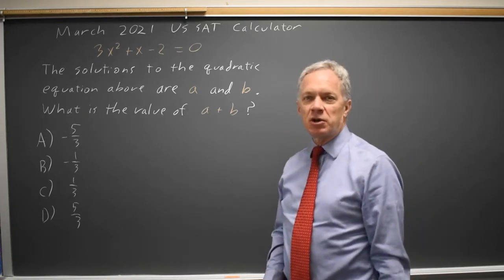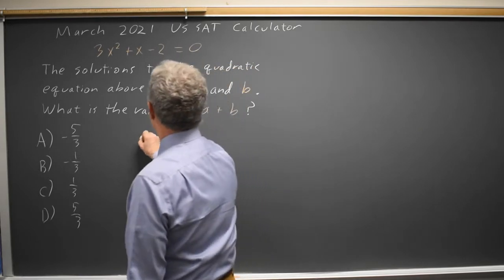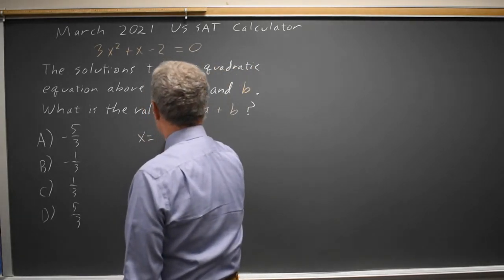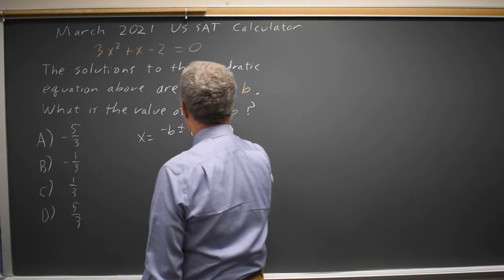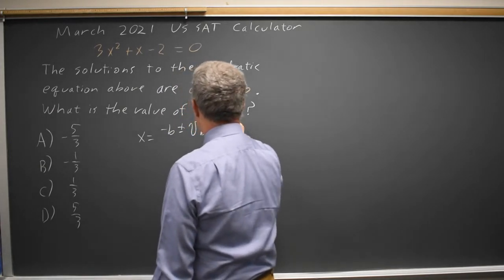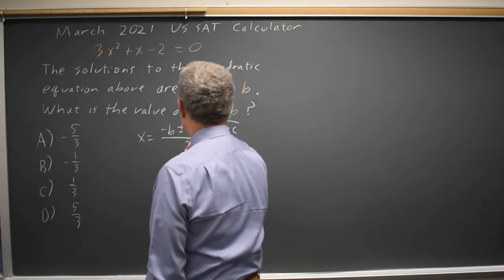One is I can use the quadratic formula. X equals negative B plus or minus square root B squared minus 4AC, all of it over 2A.